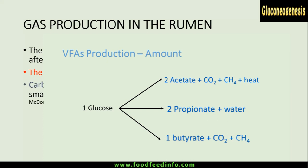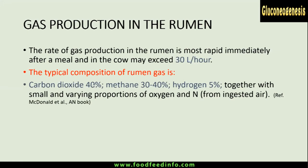The composition of rumen gases is approximately 40% carbon dioxide, 30–40% methane, and 5% hydrogen, together with very small amounts of oxygen and nitrogen. The oxygen and nitrogen come only from ingested air. The major gases produced — carbon dioxide and methane — are both greenhouse gases.